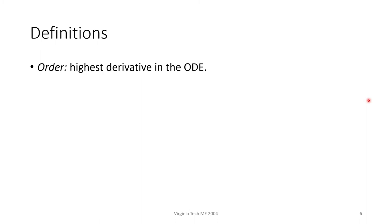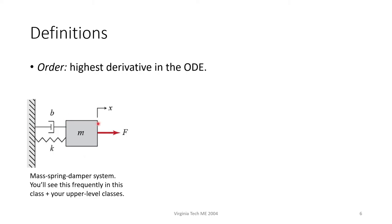One way we classify ODEs is by order. Order refers to the highest derivative in the ODE. Take a look at the mass-spring-damper system. M is of course the mass, B is your damper, and K is your spring. This will become a very familiar sight to you in the coming years. We can describe this system with the following ODE. The highest derivative in this equation is the second derivative, d squared x over dt squared term, so the order of this system is 2.